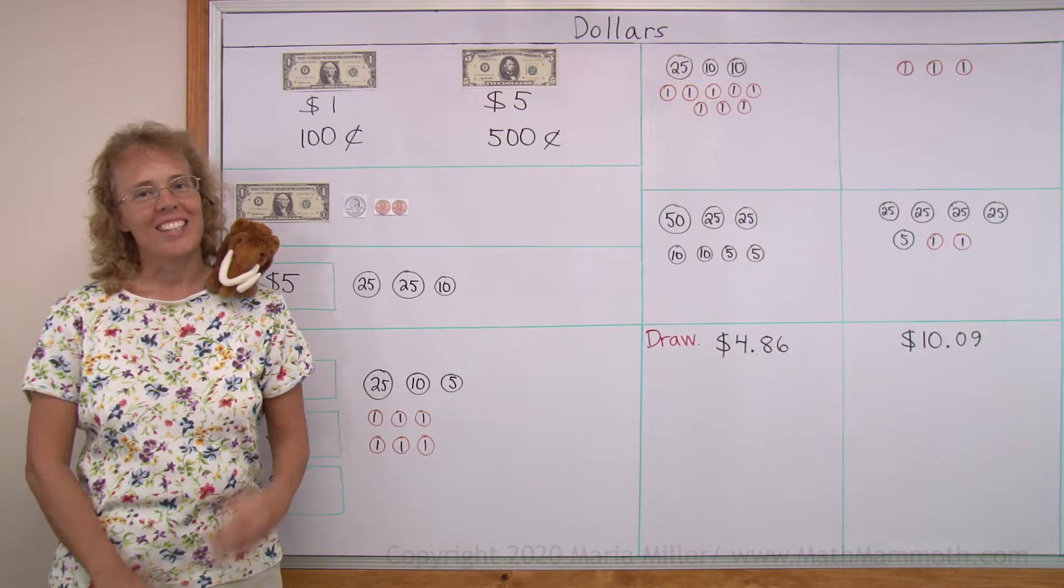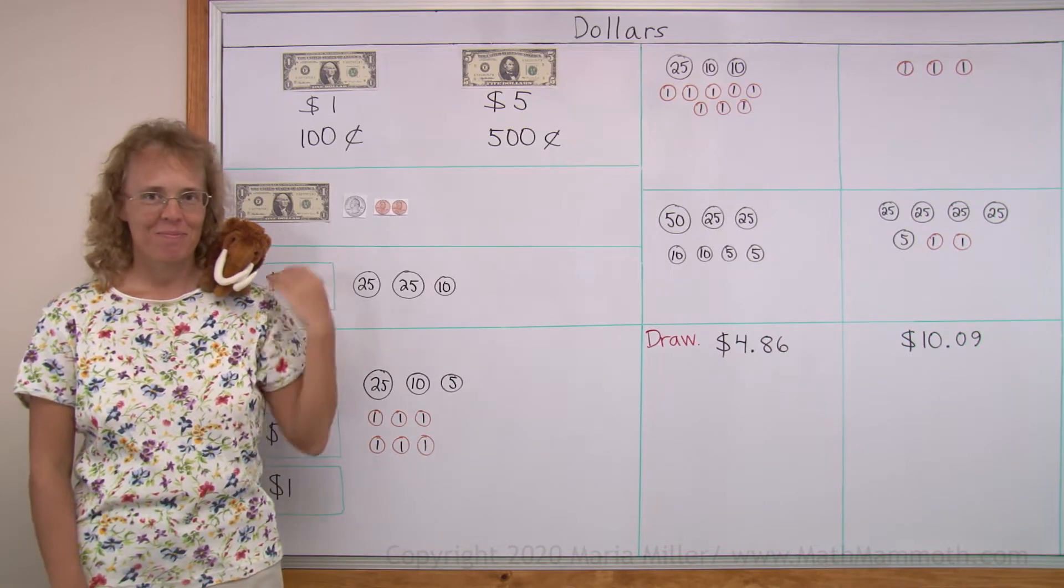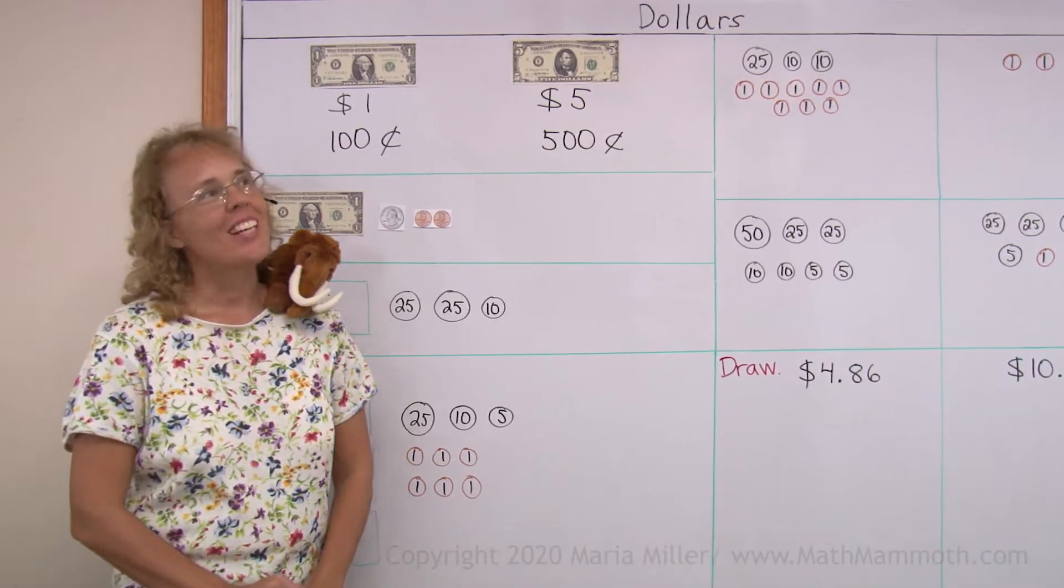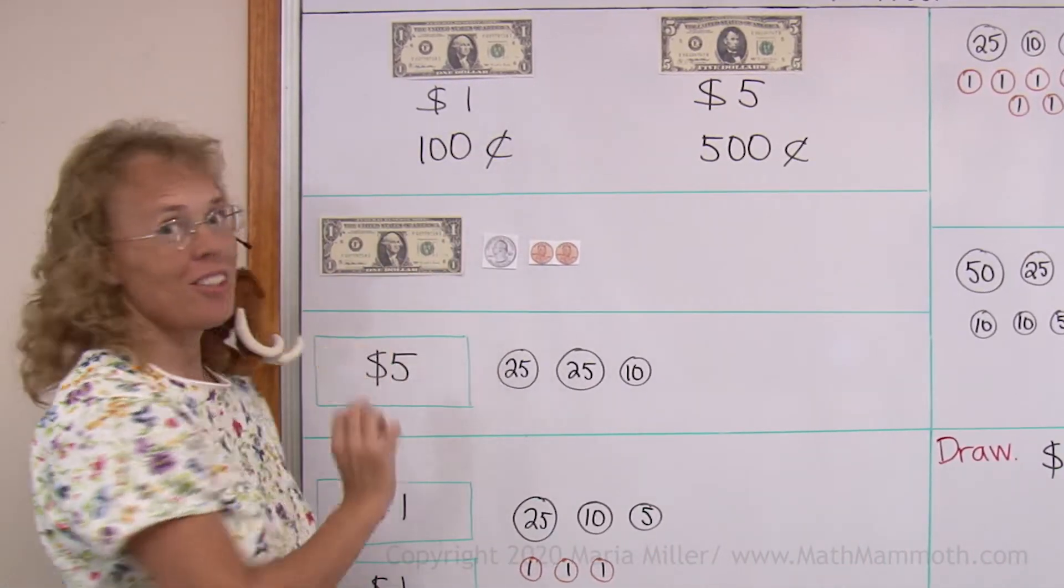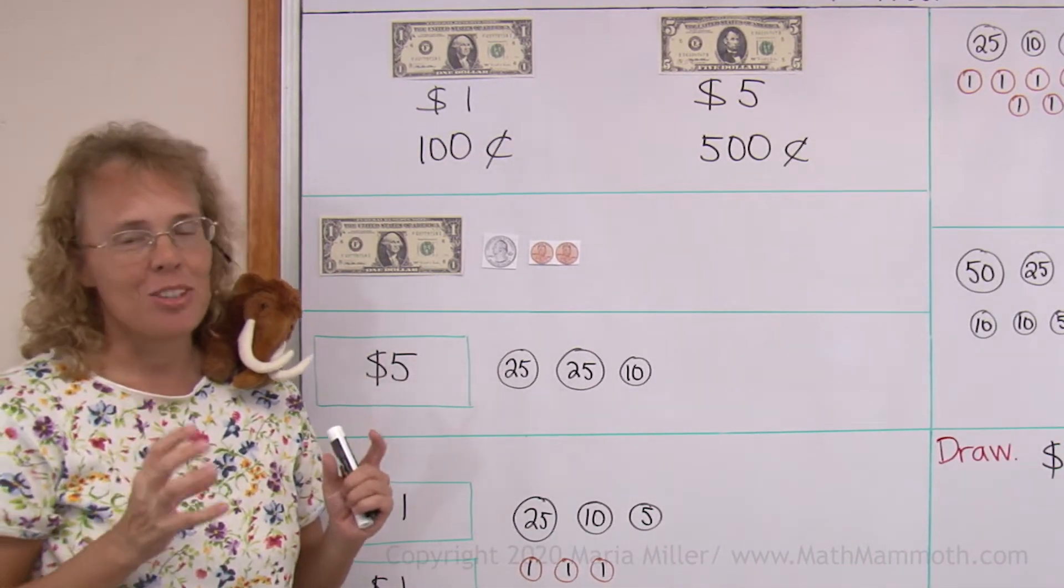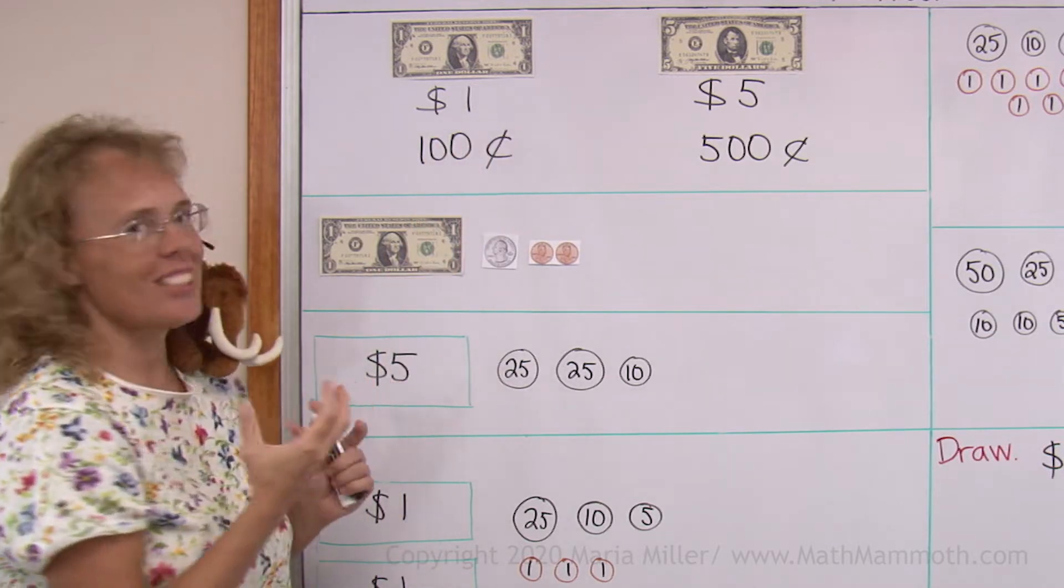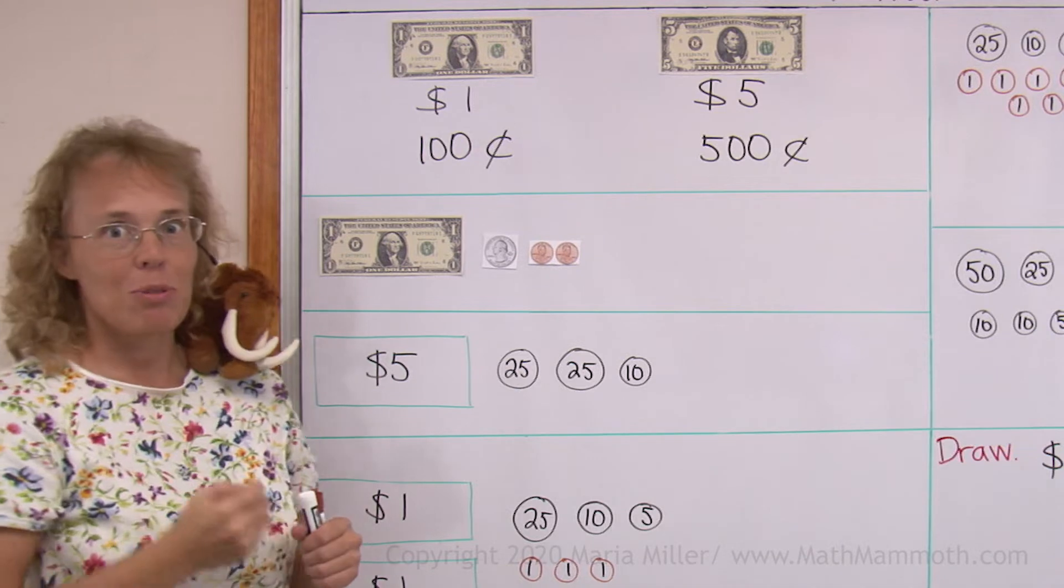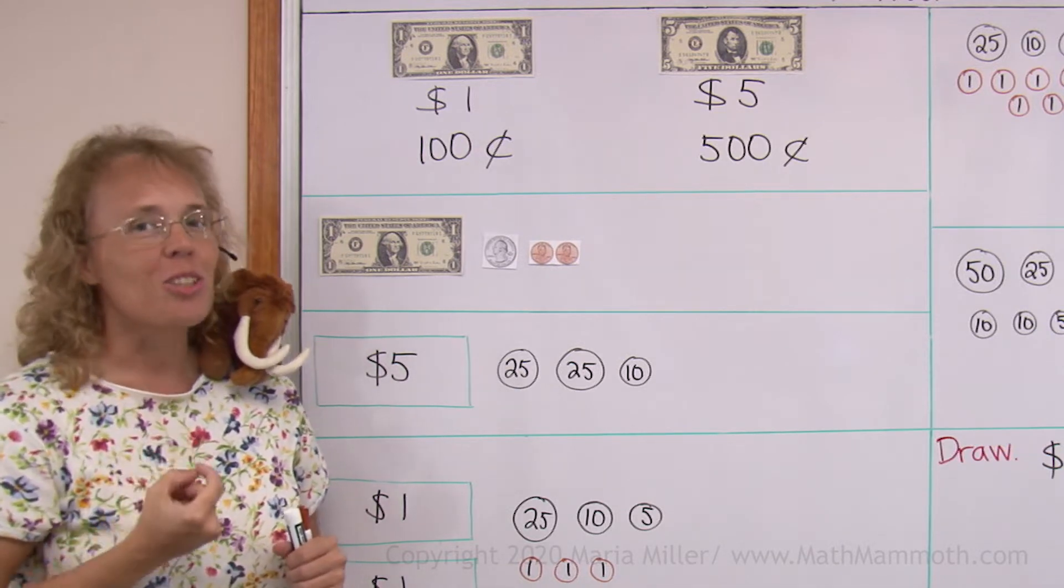Hello, my name is Maria and this is Mathie, my mascot. In this lesson we are studying dollars. Here I have a one dollar bill. It's paper money, well this is not the real, it's just a printout. But that's what it looks like and it is worth one dollar, which is also hundred cents.